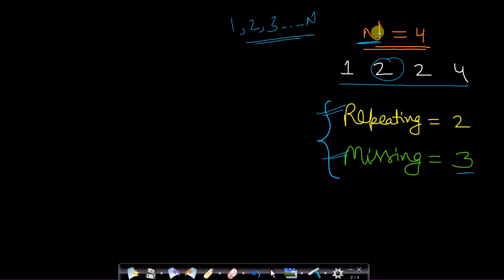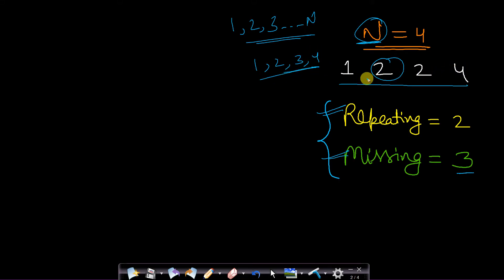Because the n value was 4, so the numbers should have been 1, 2, 3, and 4. But the input array is 1, 2, 2, 4. By the way, this array is unsorted — I have taken a sorted example, but it can be unsorted.